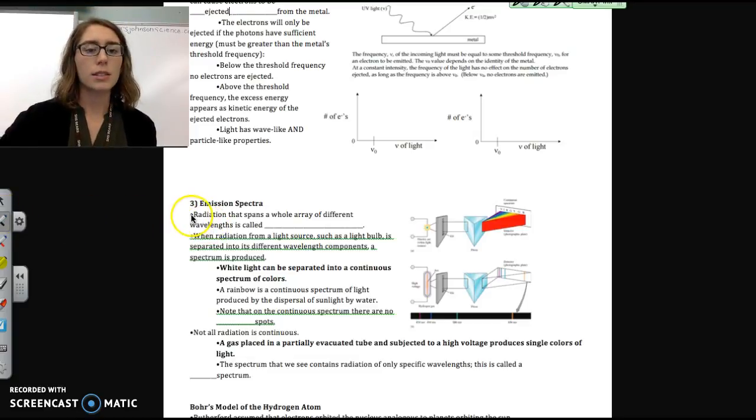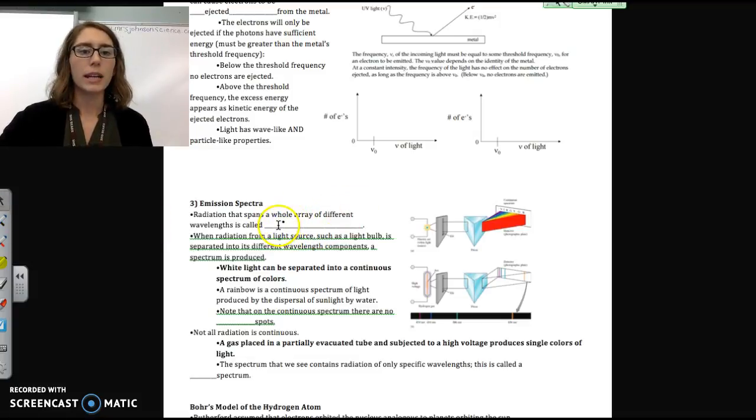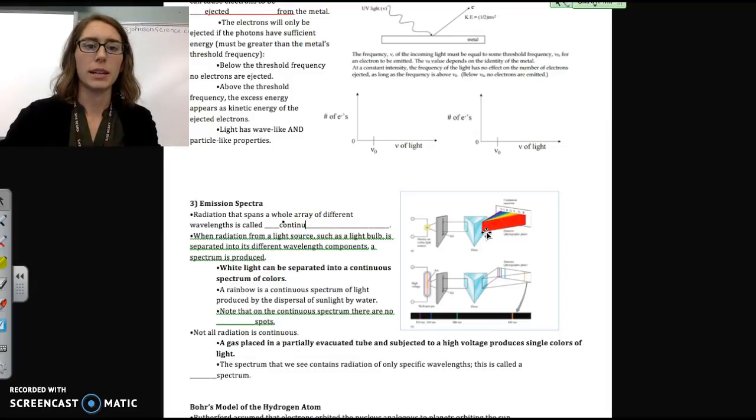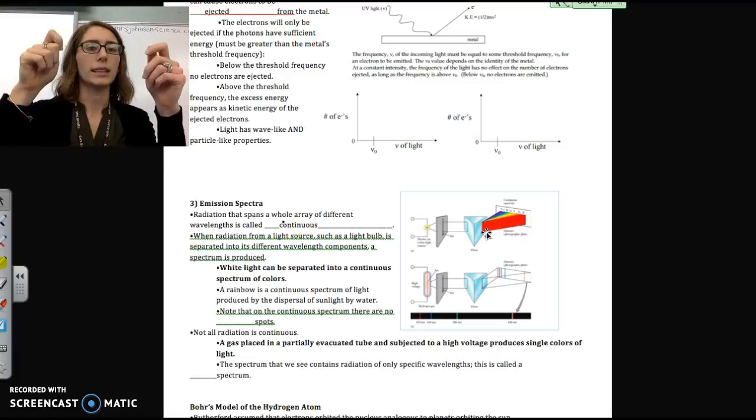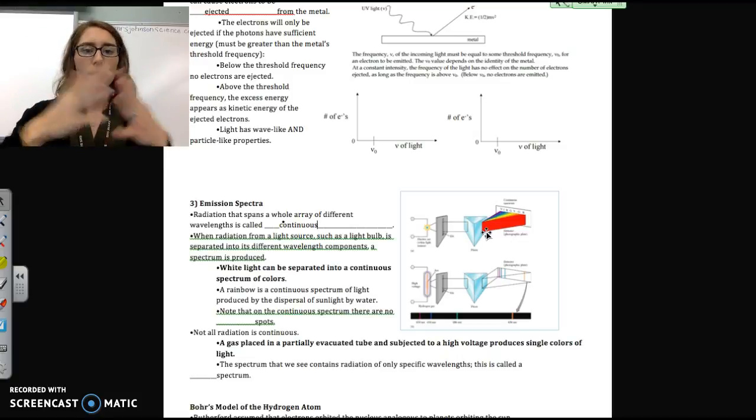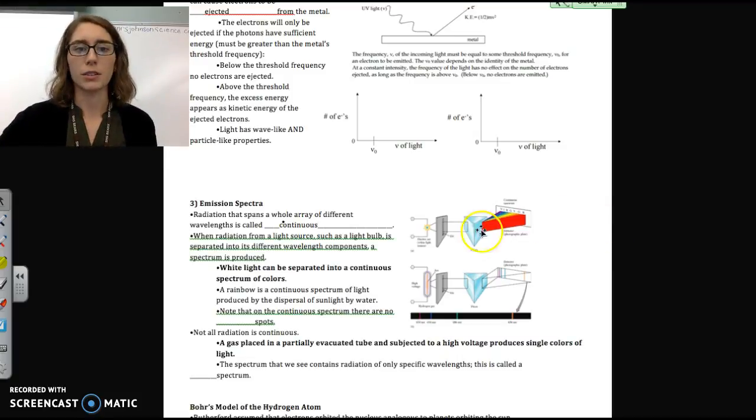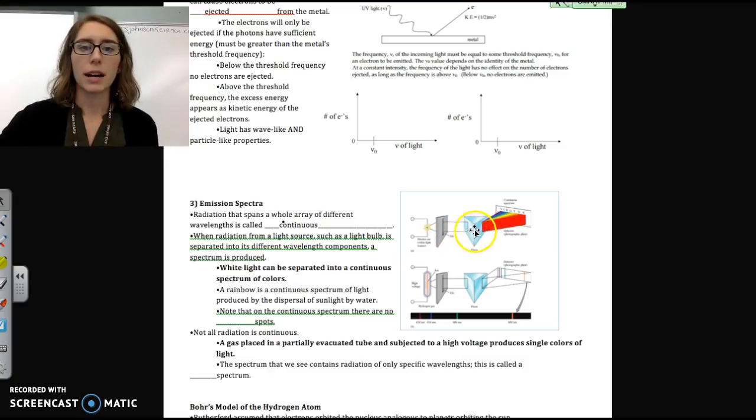So let's talk about continuous versus quantized one more time. Radiation that spans a whole array of different wavelengths is what's called continuous. And if we think, hopefully we have all done this at some point in our lives, taken a prism and held it up to white light, and we should remember that we get this whole rainbow of colors, and that's what this top image is showing here. We've got our white light passing through the prism. We see the whole spectrum, the whole ROYGBIV. That is a continuous spectrum.